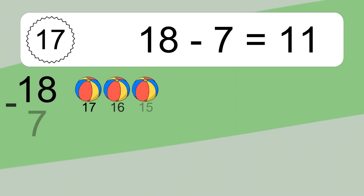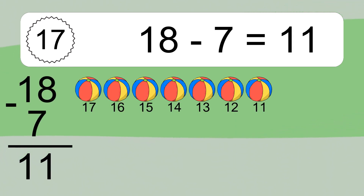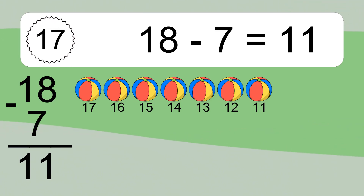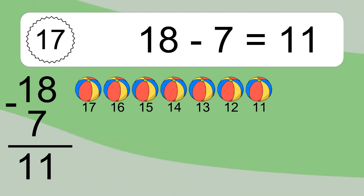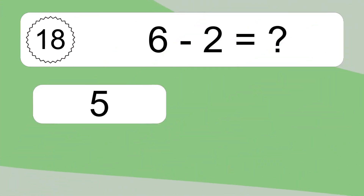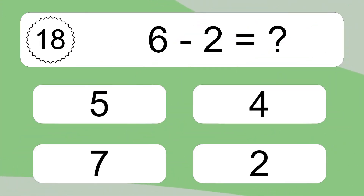18 minus 7 equals 11. Let's count it: 17, 16, 15, 14, 13, 12, 11. 6 minus 2 equals what?